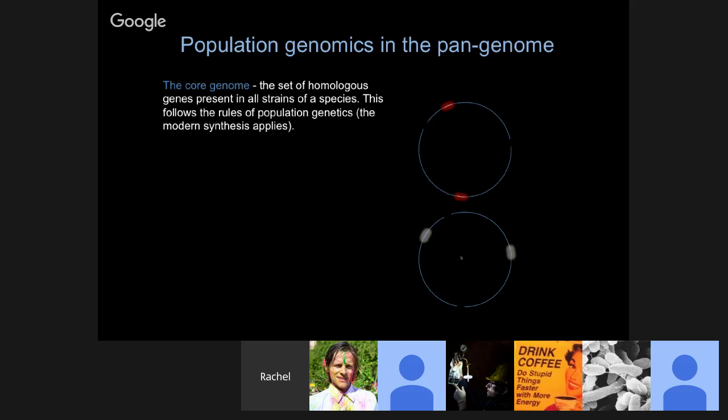Population genomics being applied to microbial genomes comes with an interesting set of problems because the microbial pan-genome of a species is made up of two components. The first component is the core genome, and this is the set of genes that are shared by all strains of a species. In the diagram here, these are the thin light blue lines.